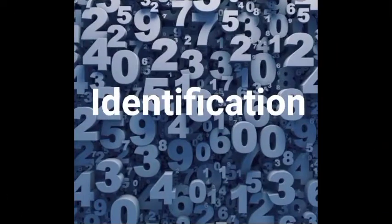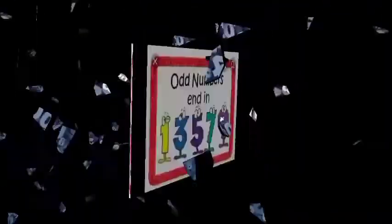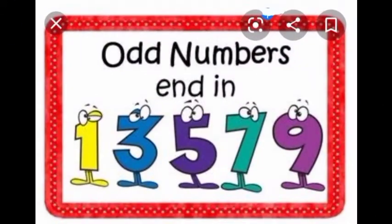To identify whether a given number is odd or even, it is enough to look at the digit in the one's place. The numbers ending with 1, 3, 5, 7, and 9 in the one's place are called odd numbers.